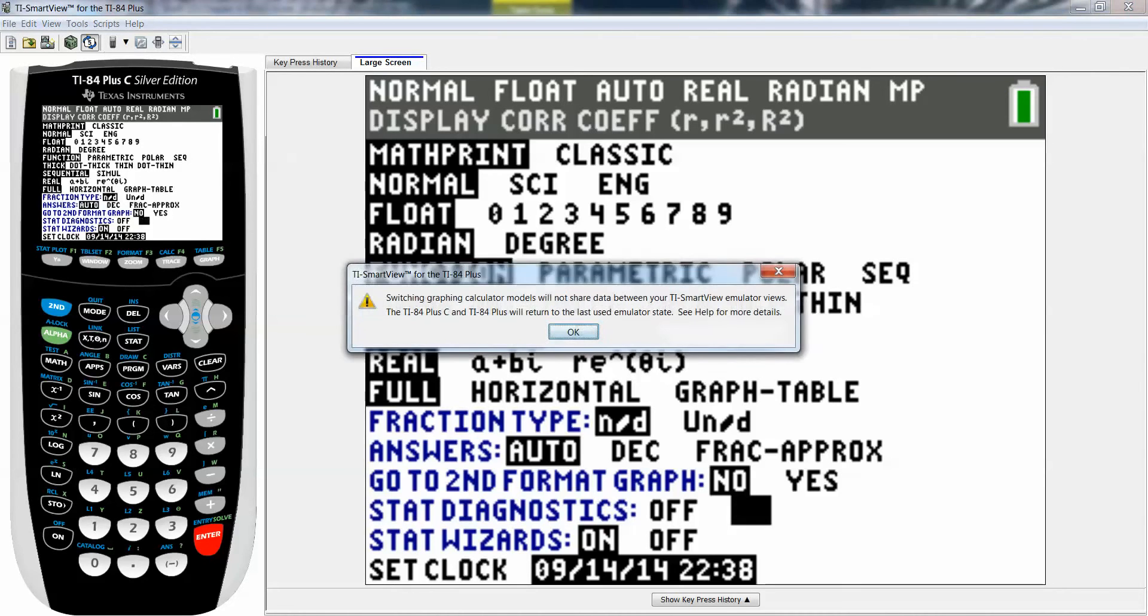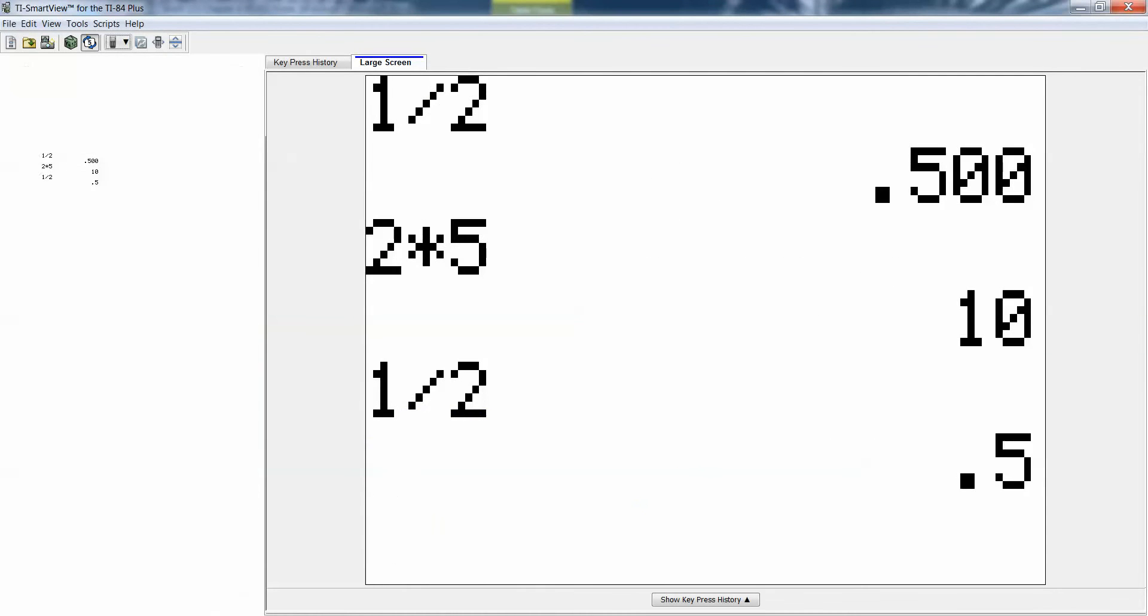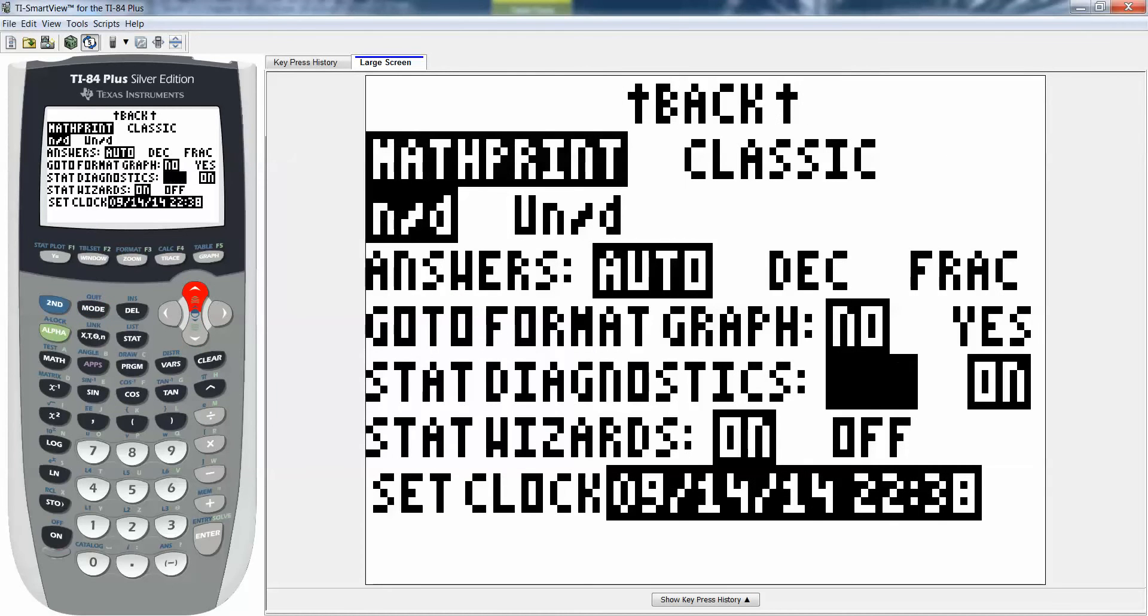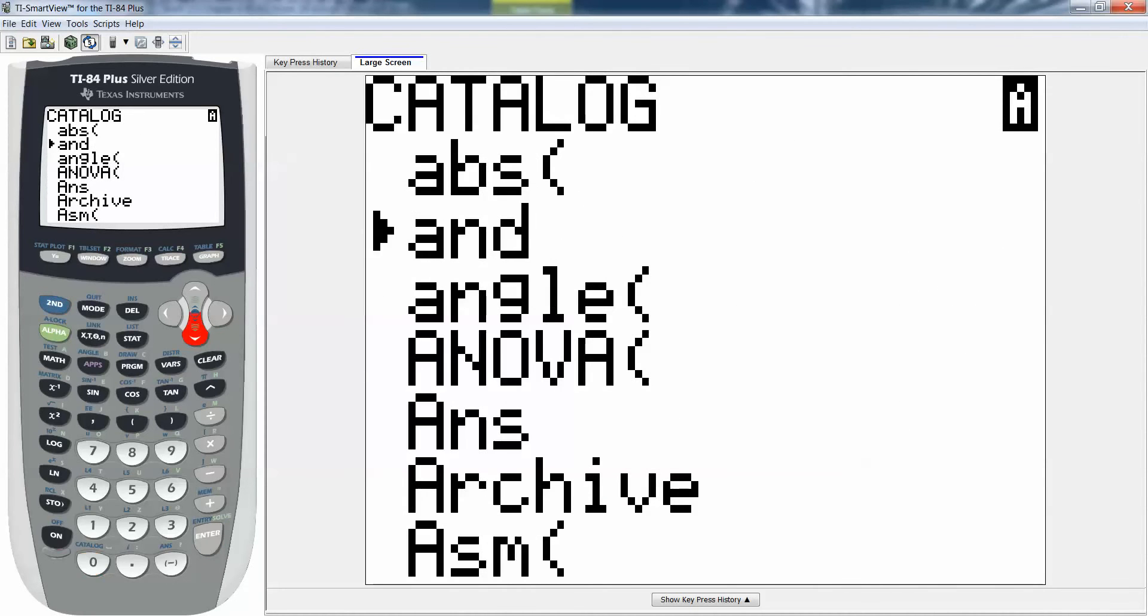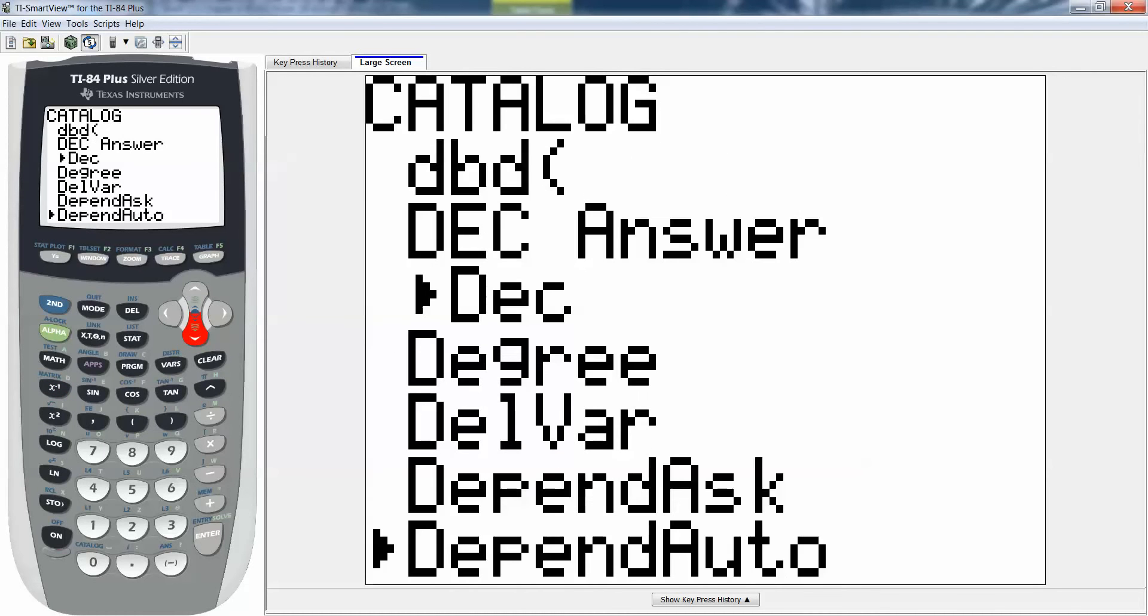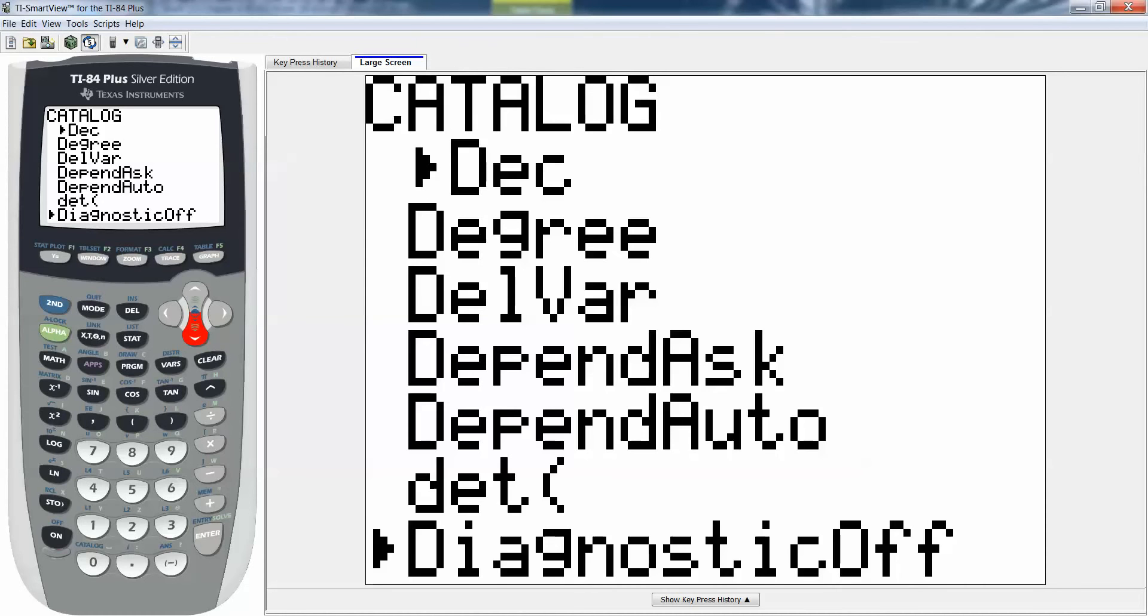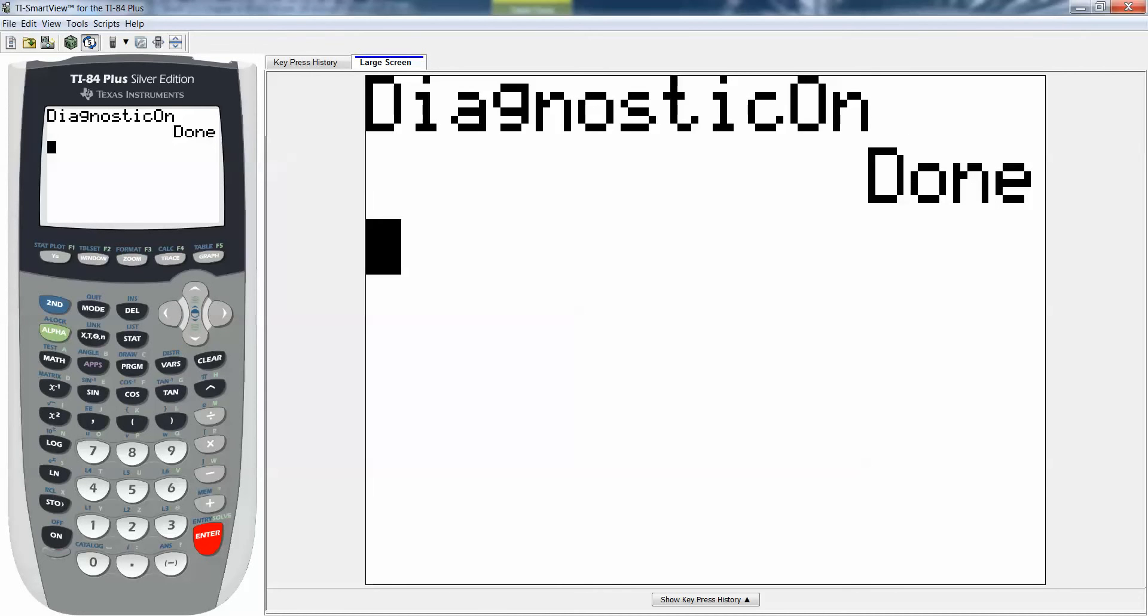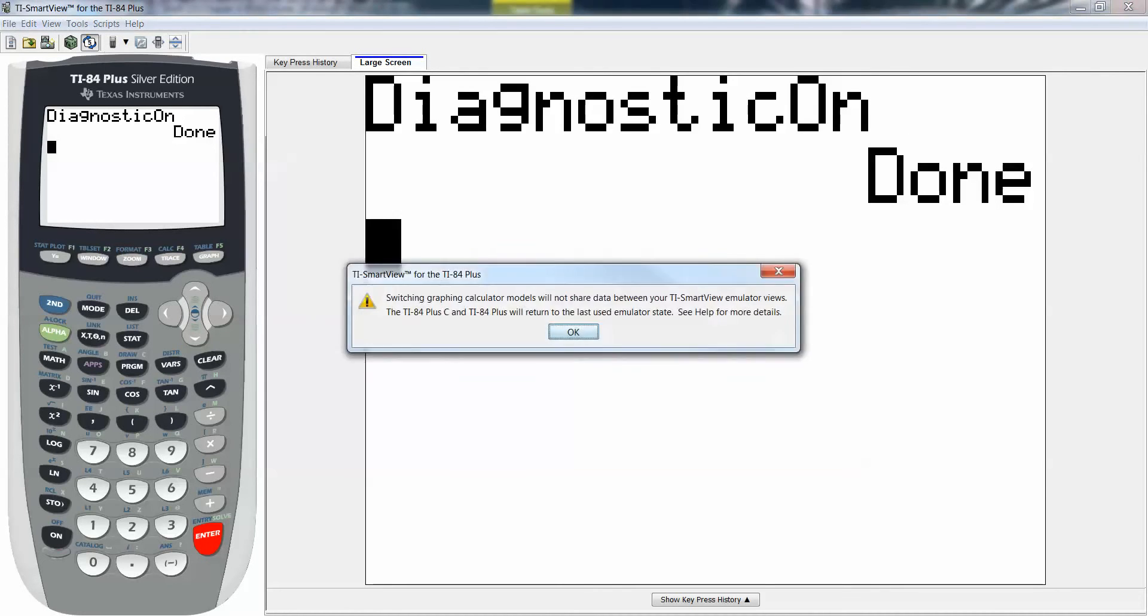Let me go to the other calculator. If I went to mode again I have the newest operating system so there it is, stats diagnostic, see how it's on? That's what you want. The other way to do it is catalog, and then you press down long enough until you hit diagnostic on and then press enter, enter and it'll say done.